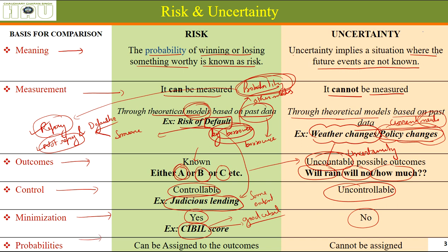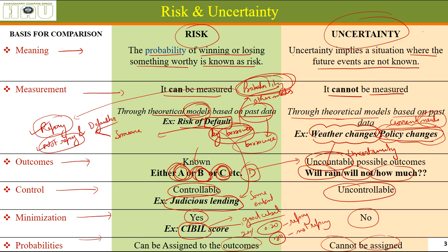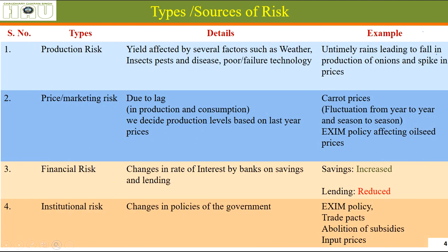Regarding probabilities — for known events like either A, B, or C, we can assign probabilities by studying past behavior. For example, there may be a 20% probability the borrower will repay and 80% probability he will not. We can assign probabilities to known outcomes. For uncertainty, there are n number of outcomes and we cannot assign any probability to them. So: risk has known outcomes, can be measured, controlled, minimized, and assigned probabilities — none of this can be done for uncertainty.